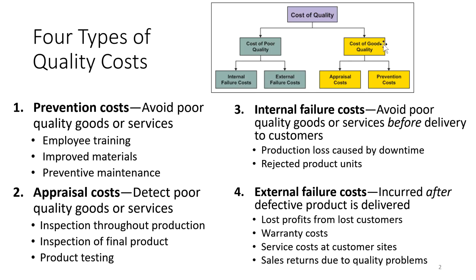Let's look at the cost of good quality — we have appraisal costs and prevention costs. Prevention costs are costs that help to avoid poor quality goods or services. Examples include employee training, improved materials, and preventive maintenance.